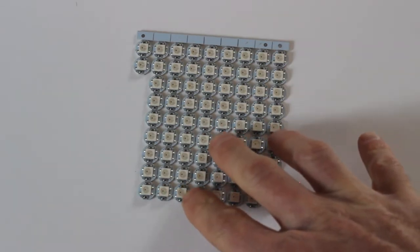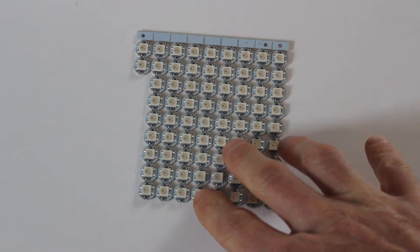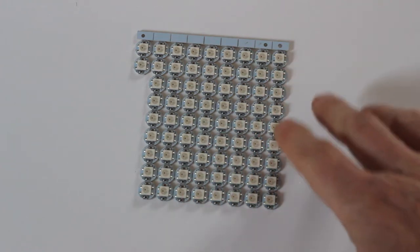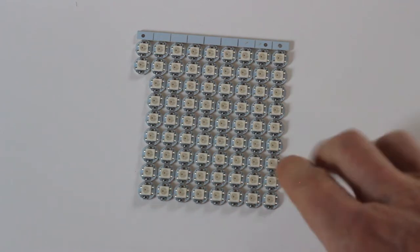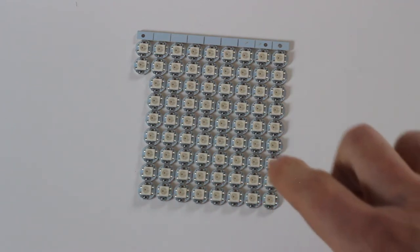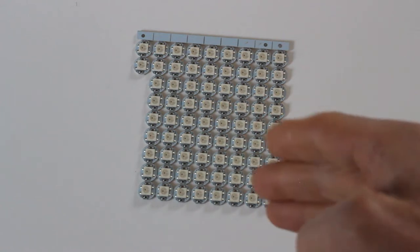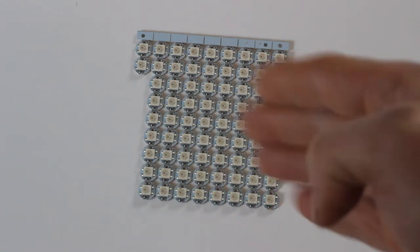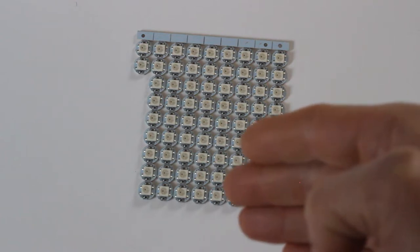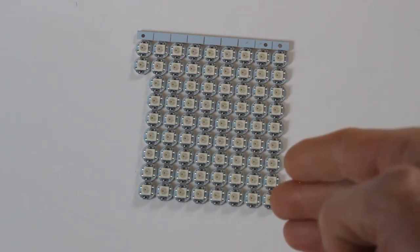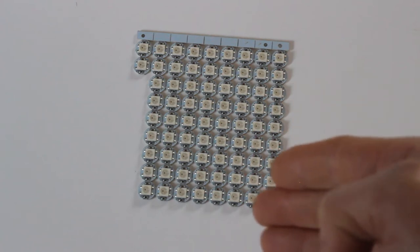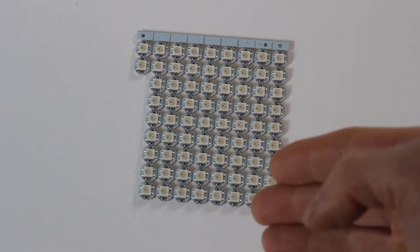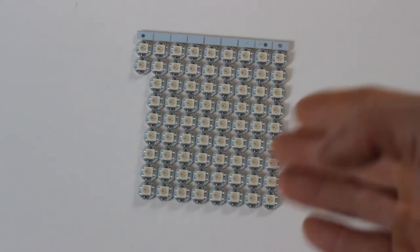The LEDs I used on this project are WS2812B addressable LEDs and these ones came on a 10 by 10 panel. The little PCBs are 10 millimeters by 10 millimeters. You can also get them from Adafruit and they sell them as NeoPixels. They're also the same folks that made the excellent NeoPixel library. So if you can get them from Adafruit, I'd suggest doing that. They'll probably be a little bit higher quality and it's good to support them because they do a lot for the maker community.